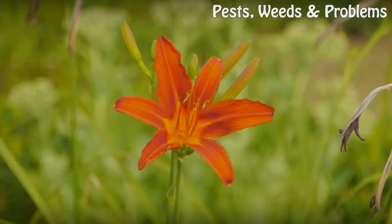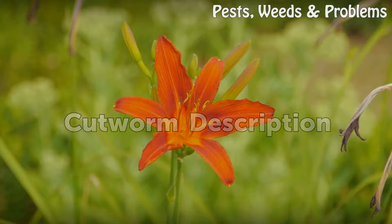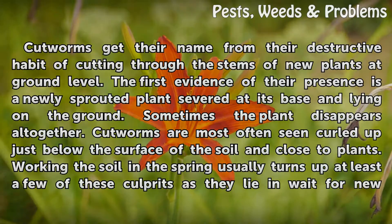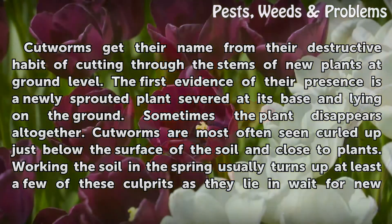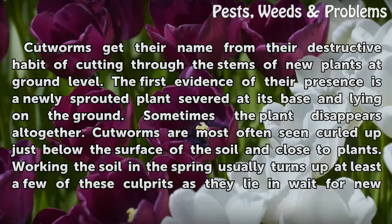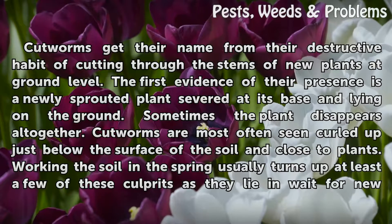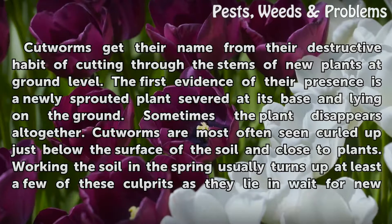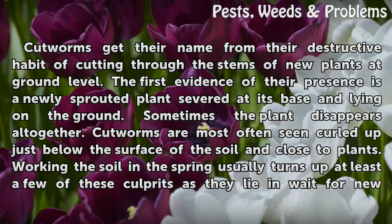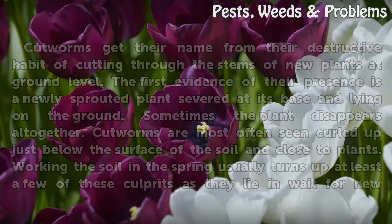Cutworm description: cutworms get their name from their destructive habit of cutting through the stems of new plants at ground level. The first evidence of their presence is a newly sprouted plant severed at its base and lying on the ground — sometimes the plant disappears altogether. Cutworms are most often seen curled up just below the surface of the soil and close to plants.